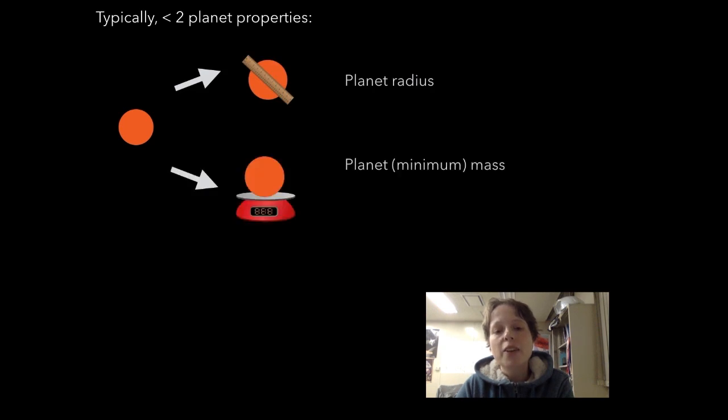These two methods give you just two properties about the planet. The transit technique gives you an estimate of the planet's radius, while the radial velocity technique tells you about the planet's minimum mass. This may be significantly less than the true mass of the planet, as the radial velocity technique only measures the wobble of the star directly towards the Earth. If the planet's orbit is tilted with respect to us, then part of the star's motion will be directed away from us. We won't measure this, and so underestimate the planet's mass.